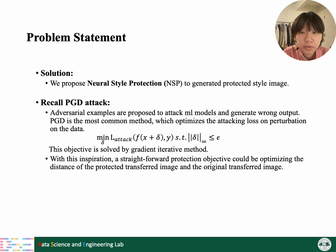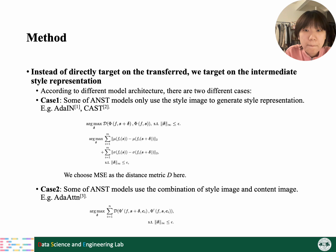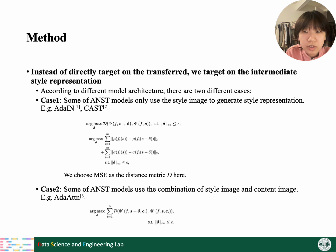To achieve style protection, a straightforward protection objective could be optimizing the distance of the protected transferred image from the original transferred image, within epsilon distance on the original style image — similar to the goal of PGD. We call this end-to-end optimization in the experiment part and use it as a baseline. Now let's go into the method. We observe that different ANST models often share a similar encoder, which is the style representation extractor. So style representation plays an important role in the style transfer process. This inspires us to target the style representation as an alternative optimization objective to reduce the effect of decoder diversity.